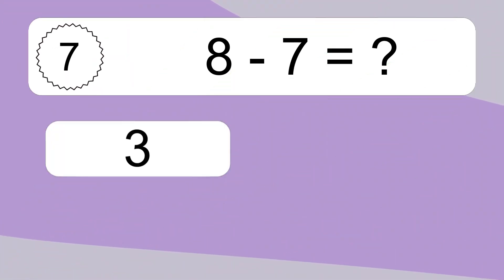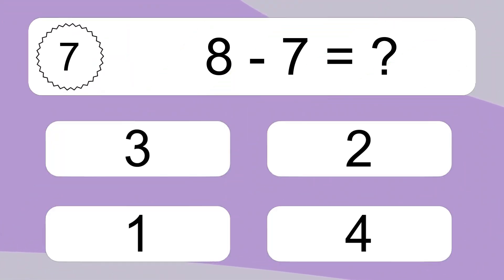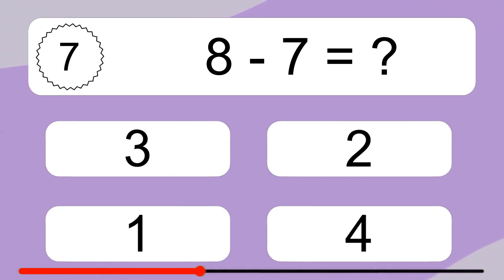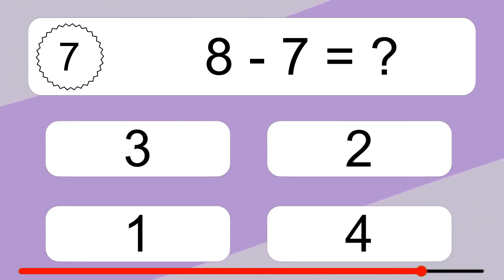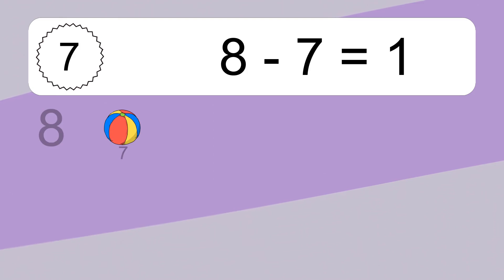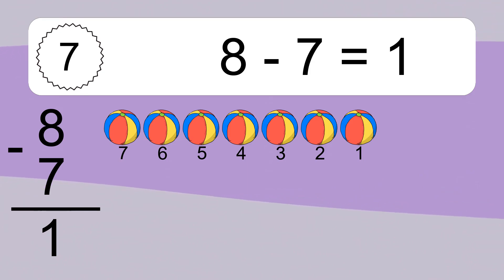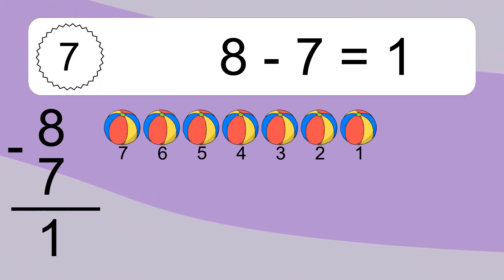8 minus 7 equals what? 8 minus 7 equals 1. Let's count it: 7, 6, 5, 4, 3, 2, 1.